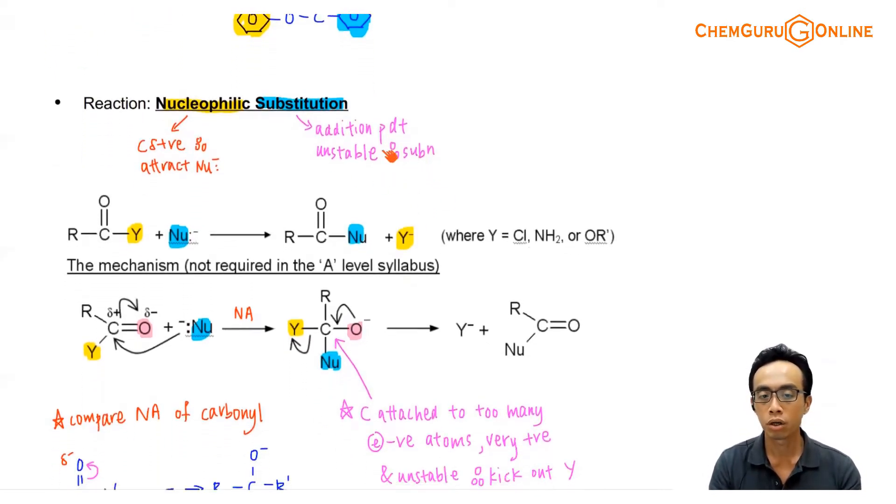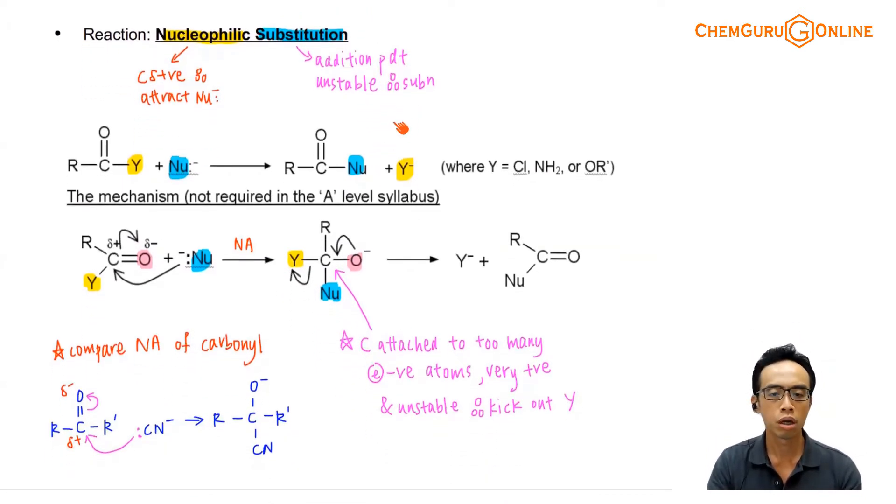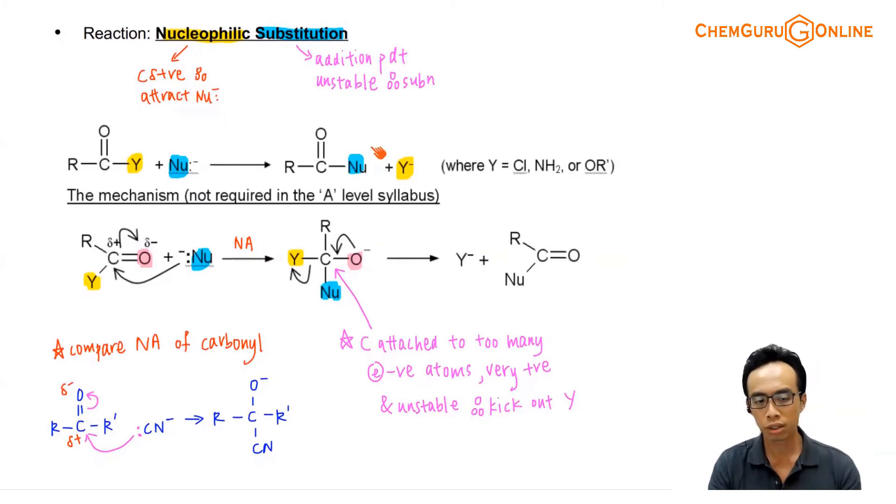Later it turns out that because the addition product is not very stable, so therefore it will prefer a substitution reaction. So the substitution is easier, just replace your Y with a nucleophile.